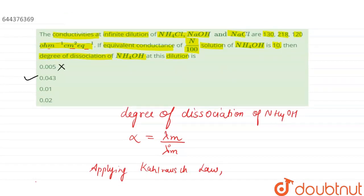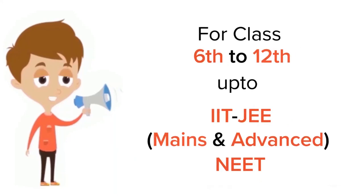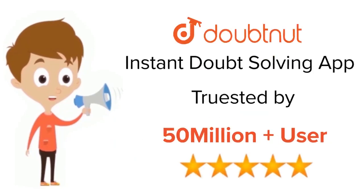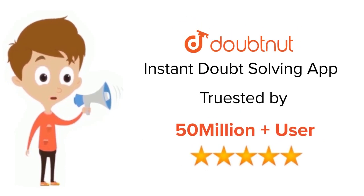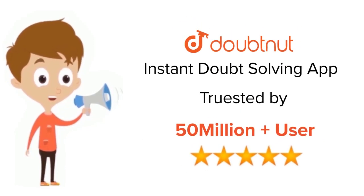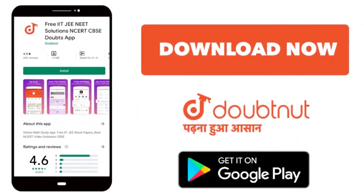So our degree of dissociation of NH4OH is 0.043, making option number two the correct answer. Thank you. For class 6 to 12th, IIT-JEE and NEET level, trusted by more than five crore students — download the DoubtNet app today.